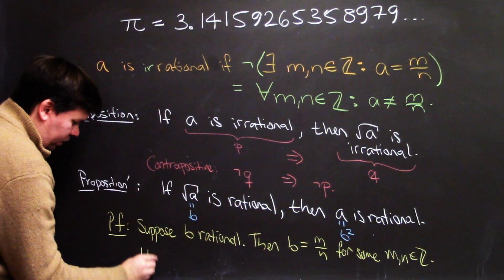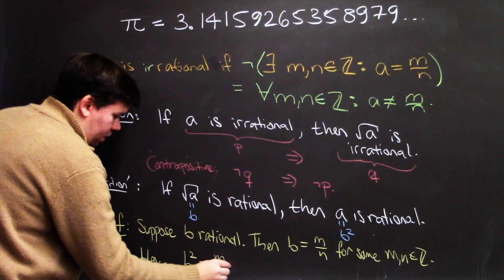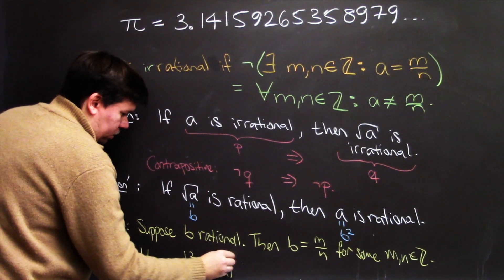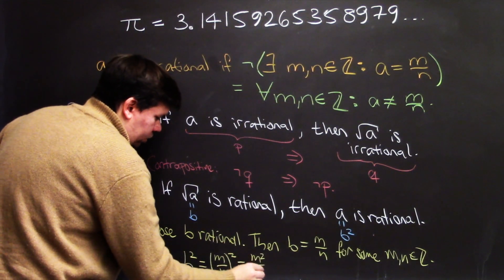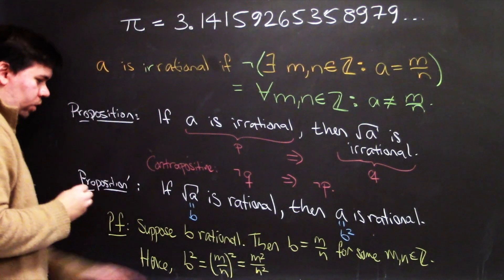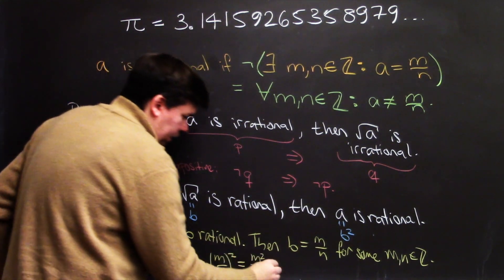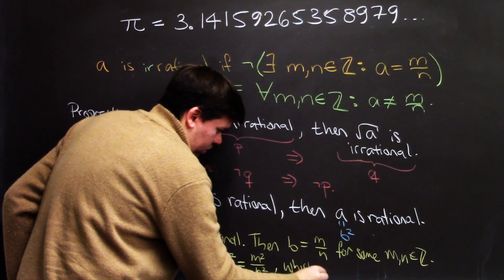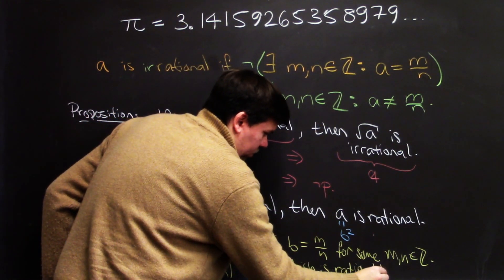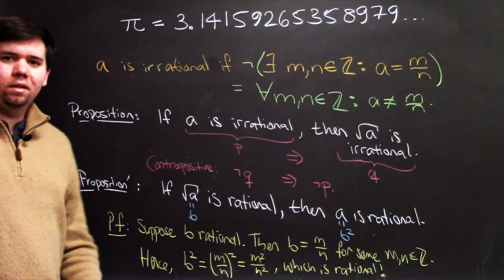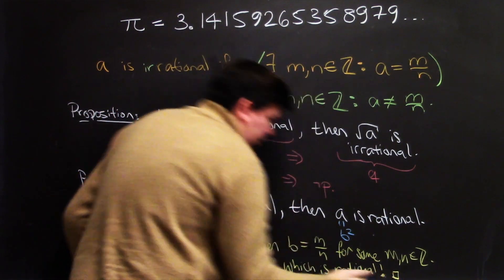But if b is m over n, what does it say about b squared? Well then, b squared would be m over n squared, which is m squared over n squared, which is a quotient between two integers. Hence, b squared is rational, completing the proof as desired. So we can put ourselves a little proof box right there.